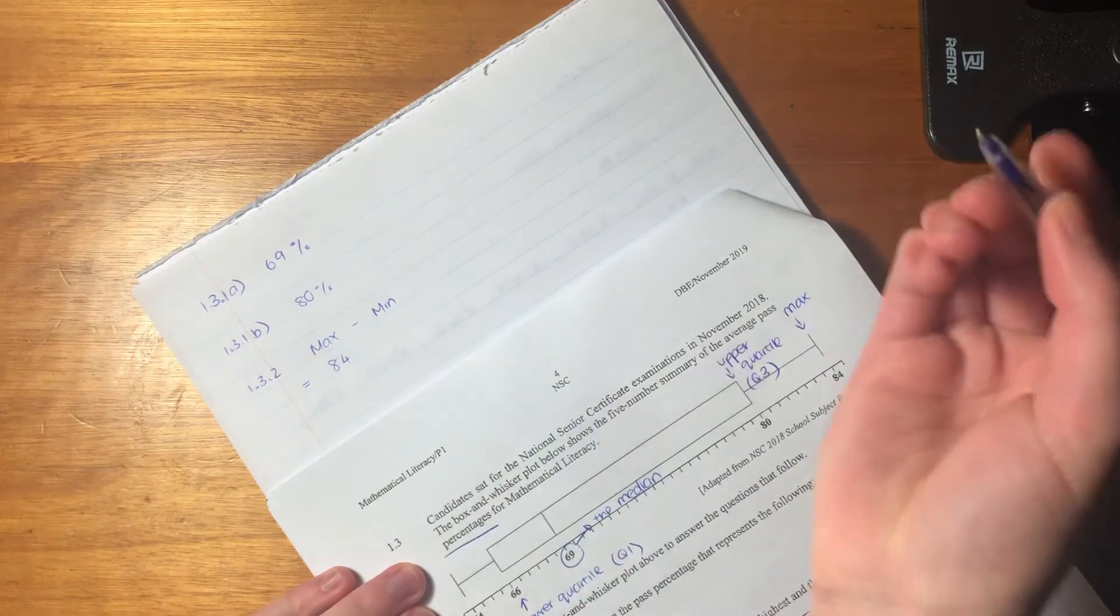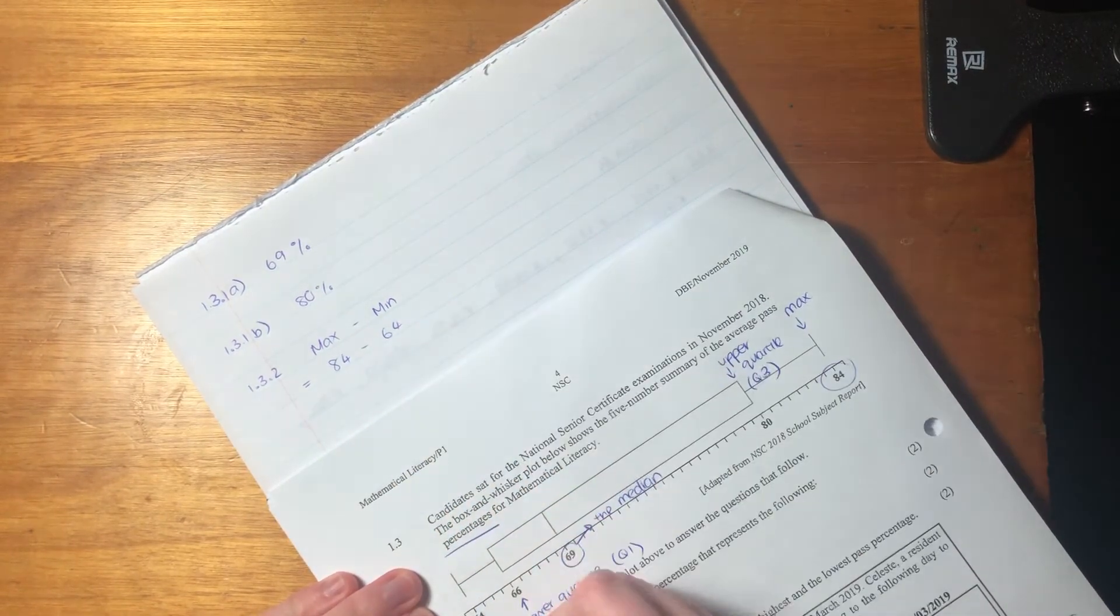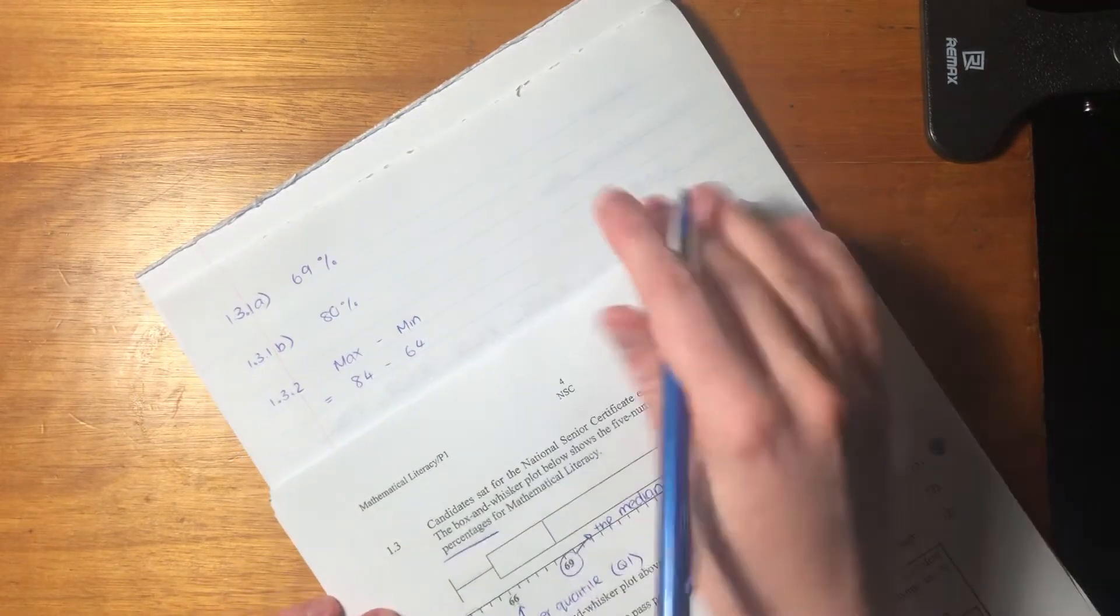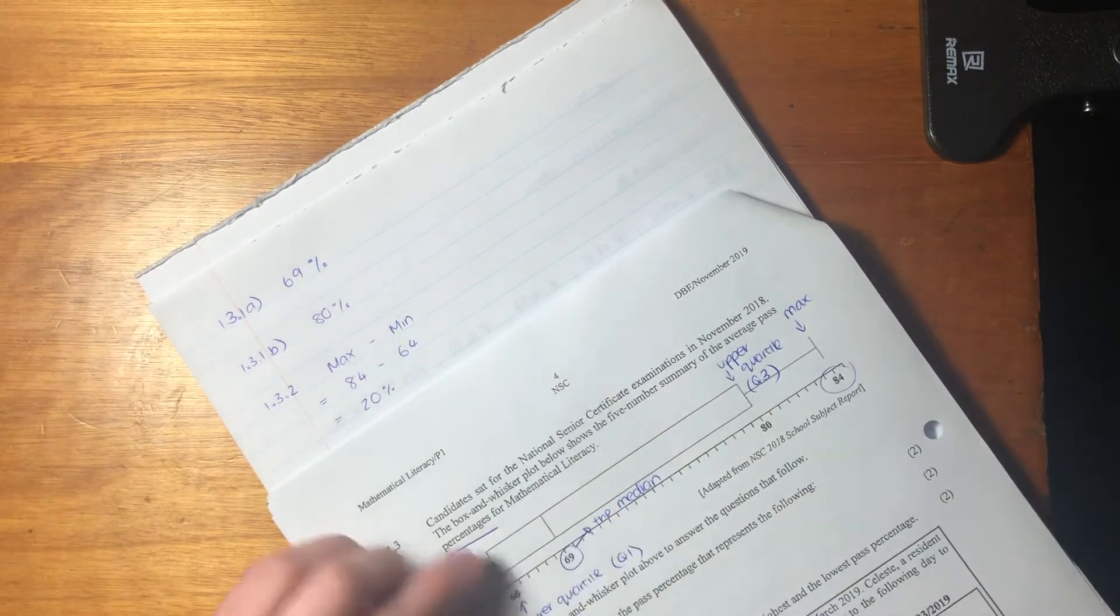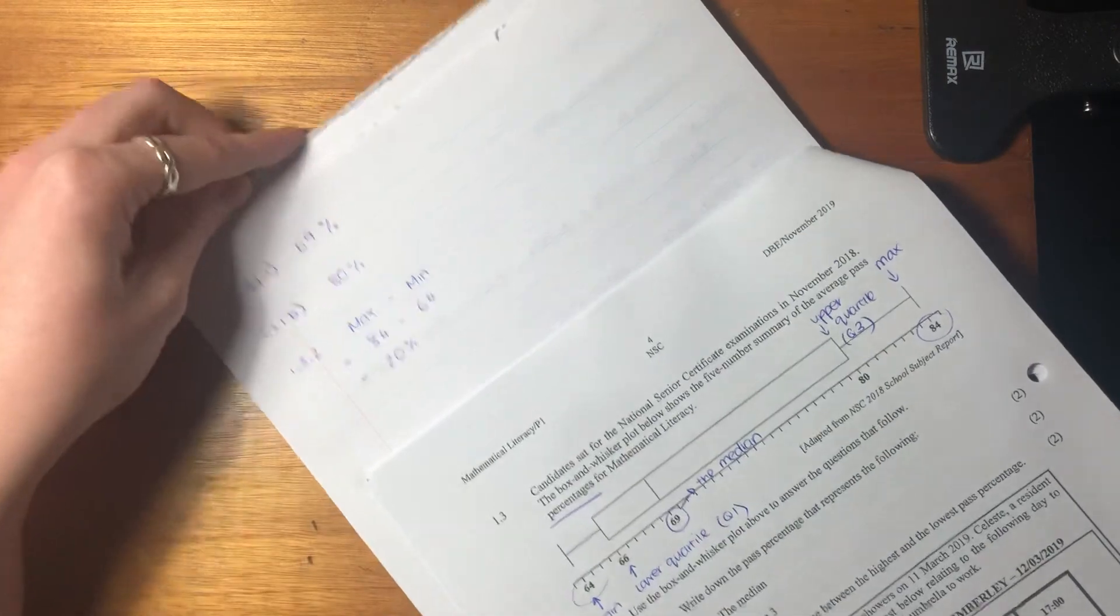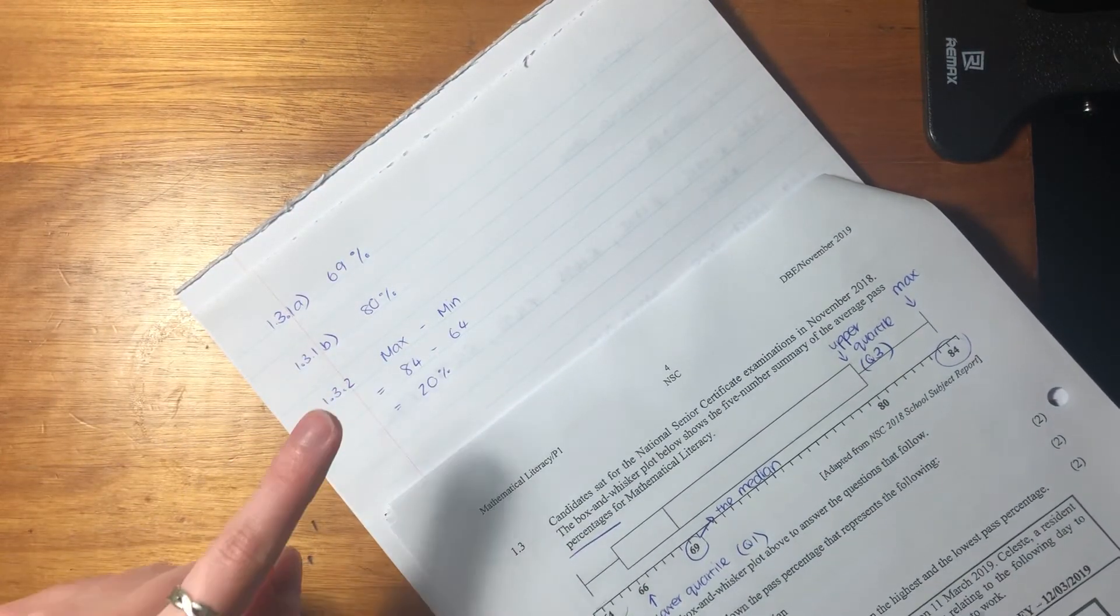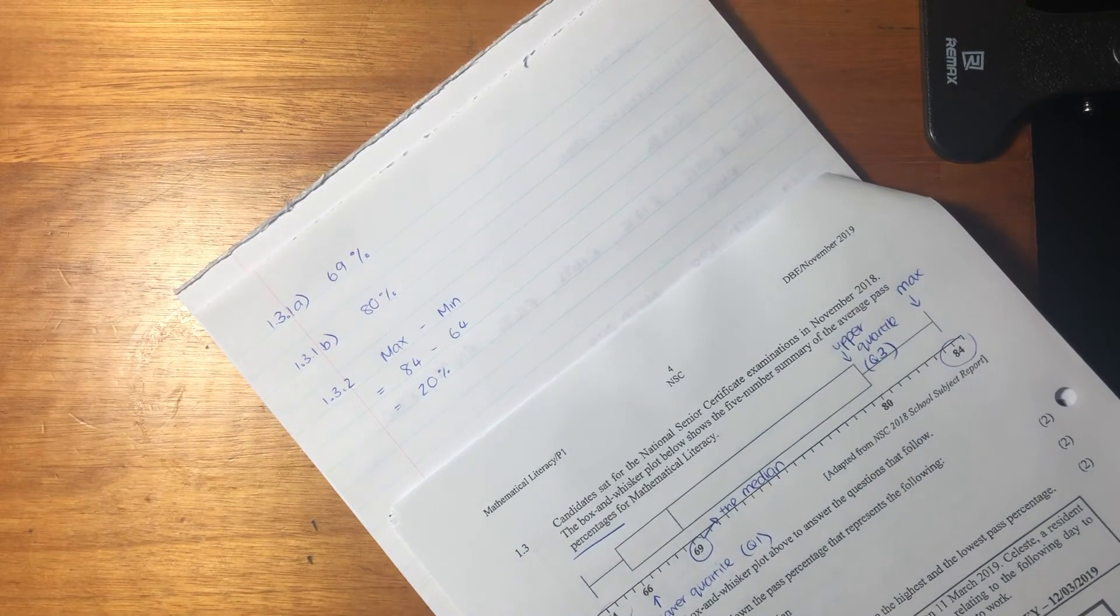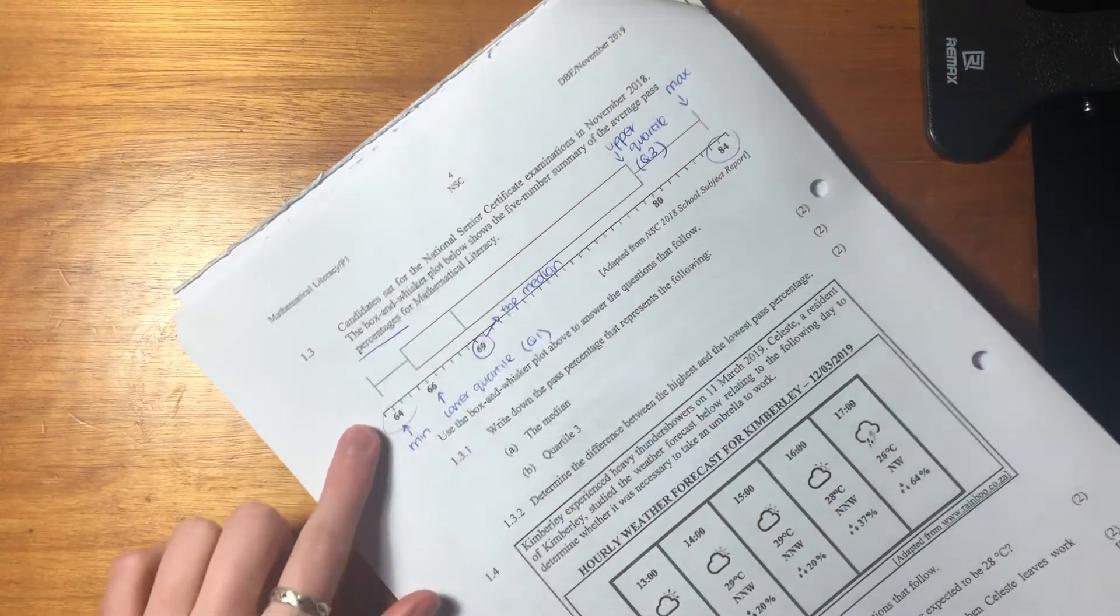Equals 84, right? 84 minus 64, right? Those two numbers, and that equals 84 minus 64 is 20. So the difference between 84 and 64 is 20%. So you can check that on your calculator if you don't believe me, but that is the answer. So we basically smashed that.